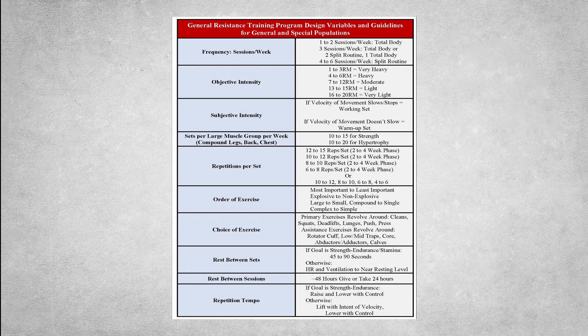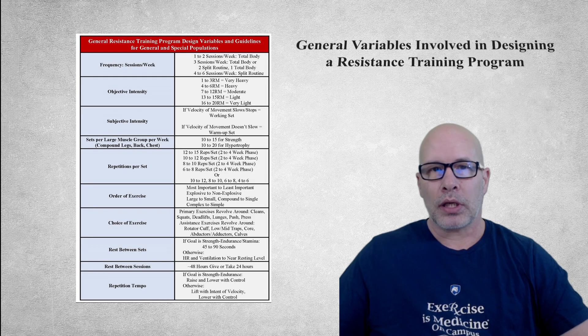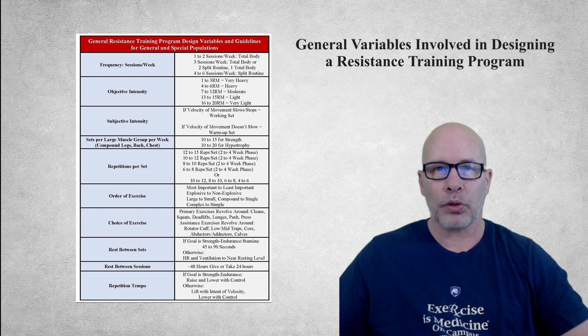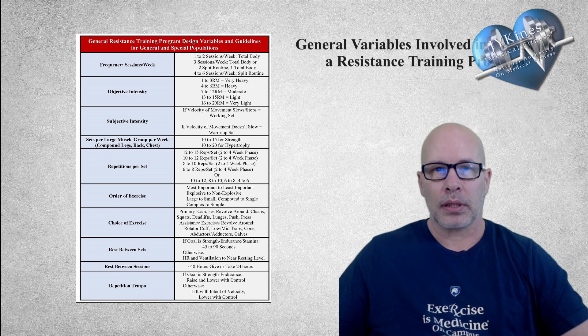So to wrap this up, one of the main things to understand is that there are a lot of variables involved in designing an efficient and effective resistance training program — it is not as simple as the FITT-P principle. And yet, despite looking complex on the surface, once you understand periodization and how it applies to both general and special populations, and if you're making sure that you're revolving your programs around primary exercises, the design of resistance training programs is actually fairly simple. So I hope you found this informative. Make sure you check out my videos where I go over these one by one in much more detail, and definitely check out my videos on how to design a periodized program for both general and special populations. See you in the next one.